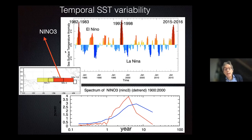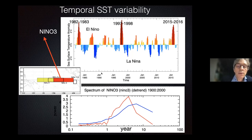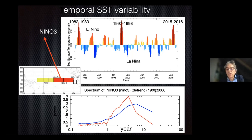El Niño is a nice project for PhD students because every four years you get one. Here you see the scalar measure of El Niño, the Niño 3 box — the red box on the left diagram. In the top figure you see the Niño 3 anomalies — the temperature anomaly over the box. You see the big El Niño in 1982–83, 1997, and 2015, as well as cooler La Niña periods. It's quite irregular, but a spectrum based on a 100-year time series shows a broad spectrum with a peak near four years.